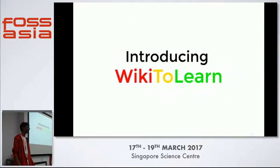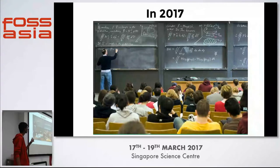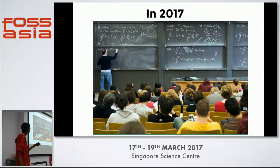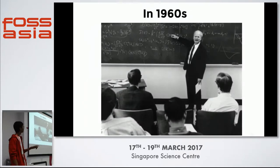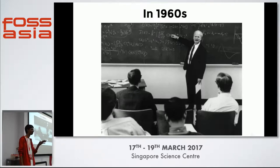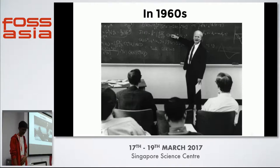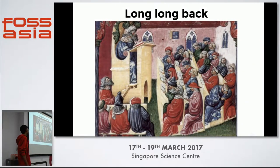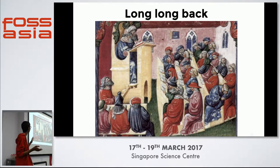I'll start by giving you an instance of what the scene with universities looks like at the current age. This is an image from Howard University from 2017 — students are sitting, there are blackboards, and a professor is teaching. This was the image from the 1960s — a similar situation with fewer blackboards and fewer students, but professors still teaching with the same methodology. And this is an image from the medieval period, where a professor is teaching with a group of students sitting around.